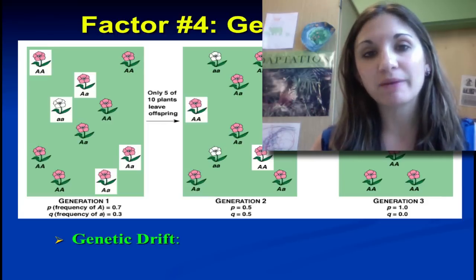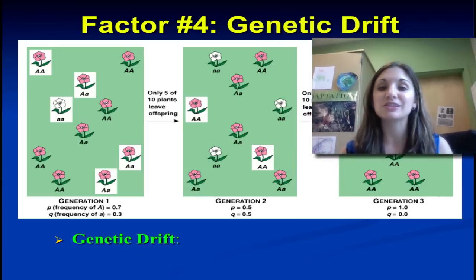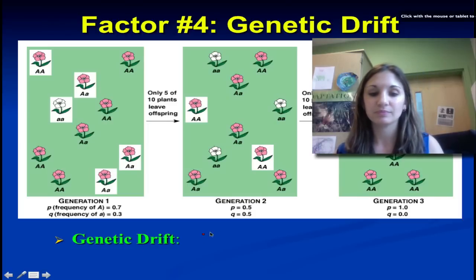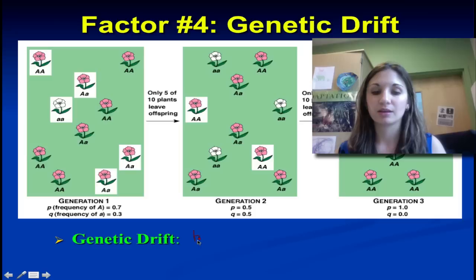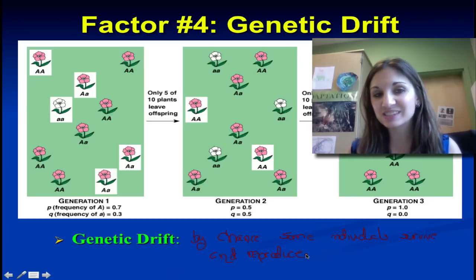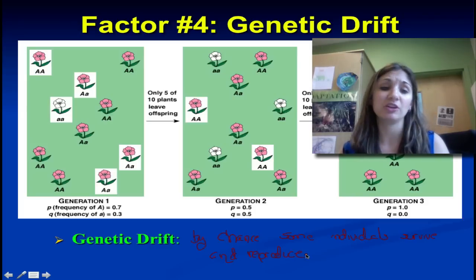The fourth factor is genetic drift, which is due more to chance than the other factors. In genetic drift, by chance, some individuals survive and reproduce. This reproduction and success isn't due to any particular phenotype the organism displays — it's simply due to chance.